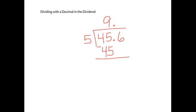So when we subtract we have nothing left over. Bring down your six. Five goes into six one time, one times five is five, subtract and we have one left over. But remember we don't have remainders anymore.